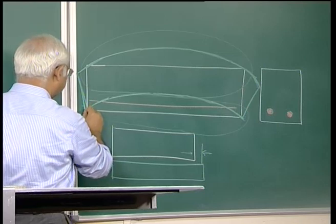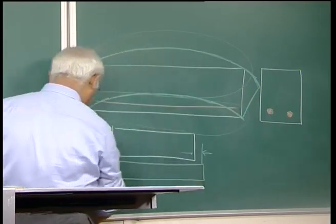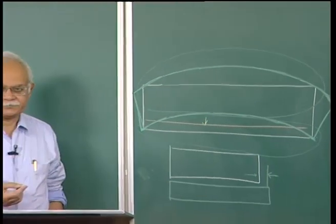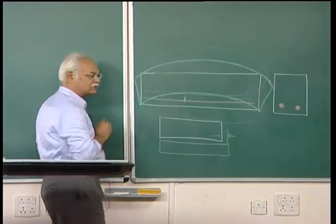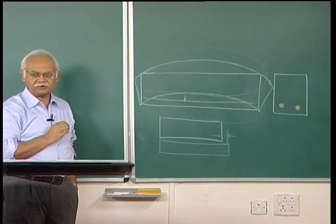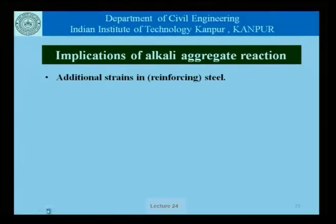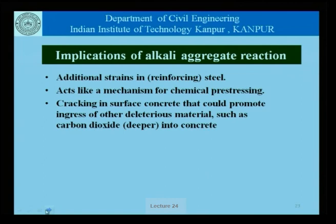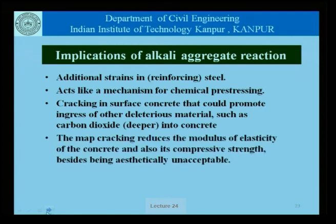This expansion in the concrete must also be reflected in the expansion of the reinforcing bar. Without doing anything, the reinforcing bar has now undergone some amount of tensile strains. Apart from additional strains in the reinforcing steel, the situation acts like a mechanism for chemical pre-stressing. There is cracking at the surface of the concrete that could promote ingress of other deleterious materials such as carbon dioxide deeper into the concrete. Map cracking on the surface reduces the modulus of elasticity and compressive strength of concrete besides being aesthetically unacceptable.